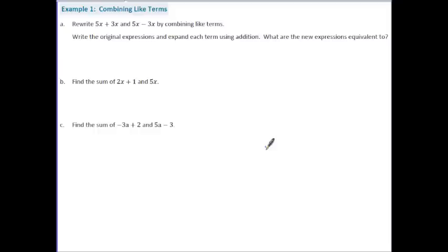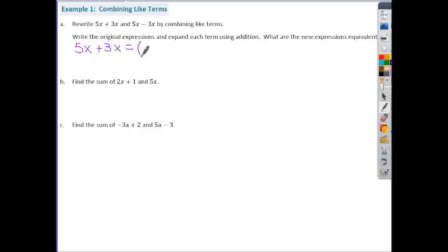Let's take a look at Example 1. Part a says rewrite five x plus three x and five x minus three x by combining like terms — write the original expressions and expand each term using addition. To expand, we can think back to bar modeling. If we wanted to expand five x plus three x, working backwards it would look like x plus x plus x plus x plus x grouped together representing five x.